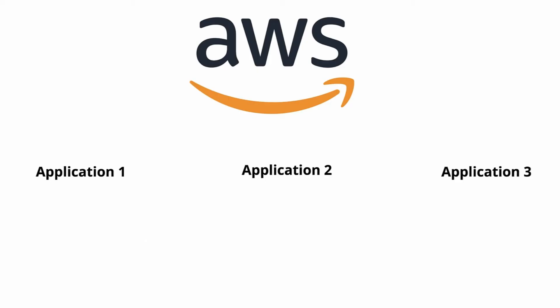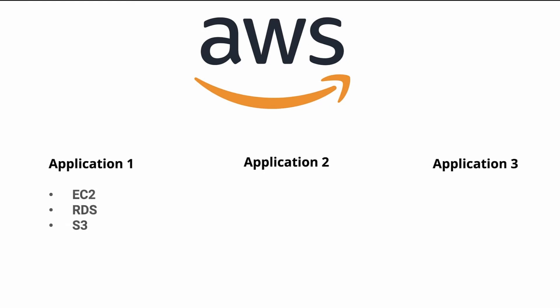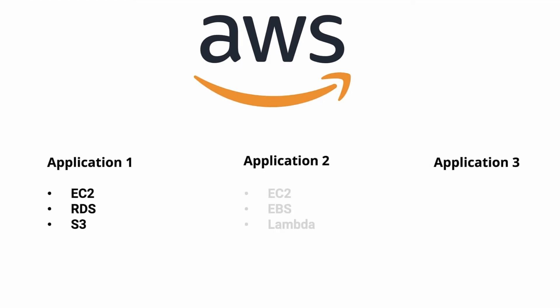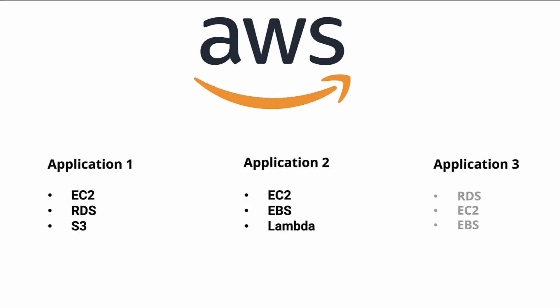Say you're running three applications on AWS and monitoring them with Site247. Application 1 uses EC2, RDS and S3. Application 2 uses EC2, EBS and Lambda. Application 3 uses RDS, EC2 and EBS.